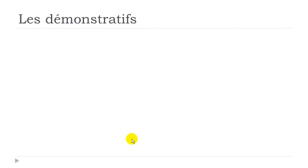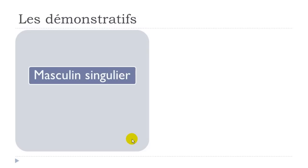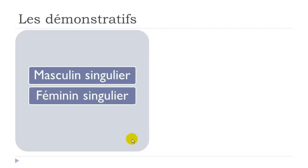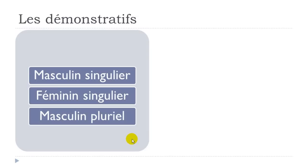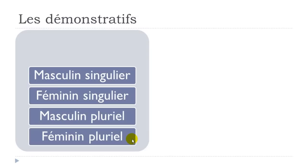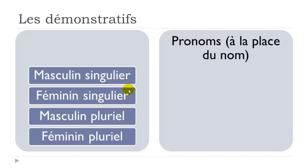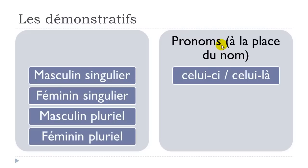Now let's continue with the demonstrative pronouns. Same structure: we'll see masculine singular, feminine singular, masculine plural, and feminine plural. These pronouns replace the noun. For the masculine form, we have 'celui-ci' and 'celui-là.' 'Celui-ci' means 'this one' (the nearest), and 'celui-là' means 'that one.'